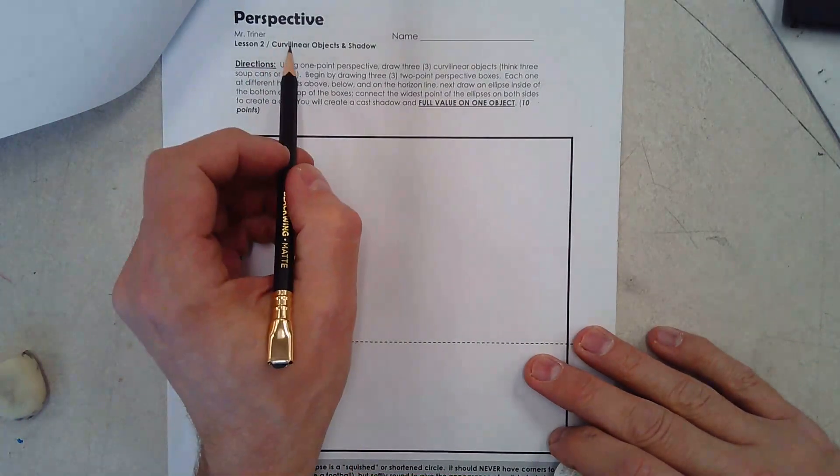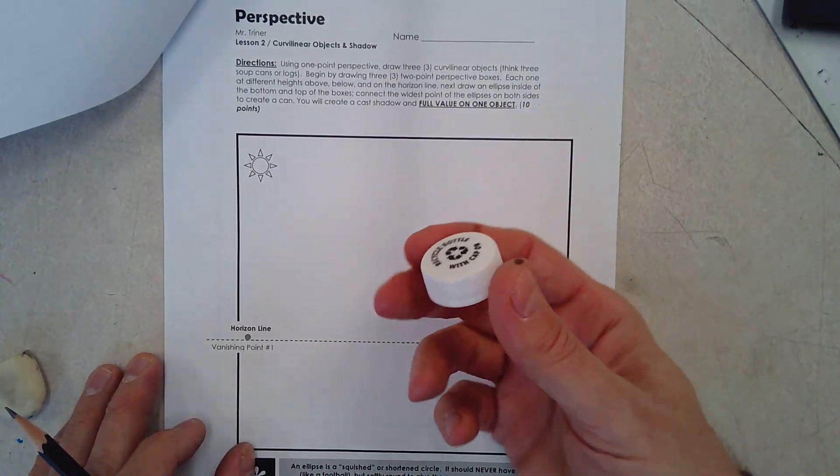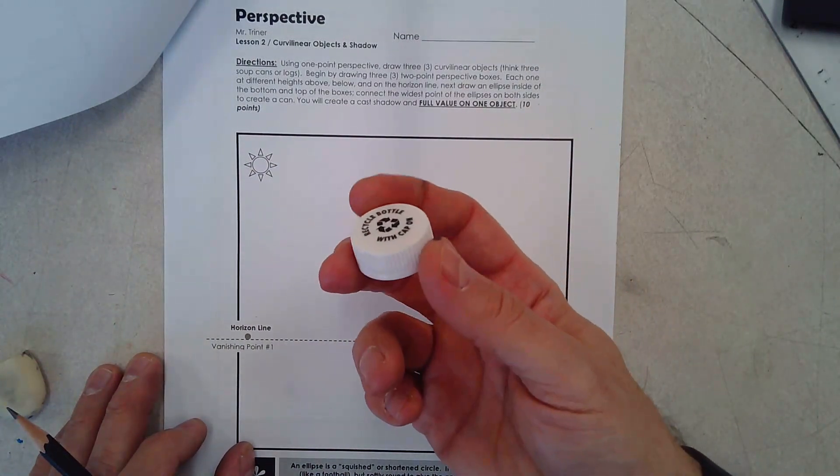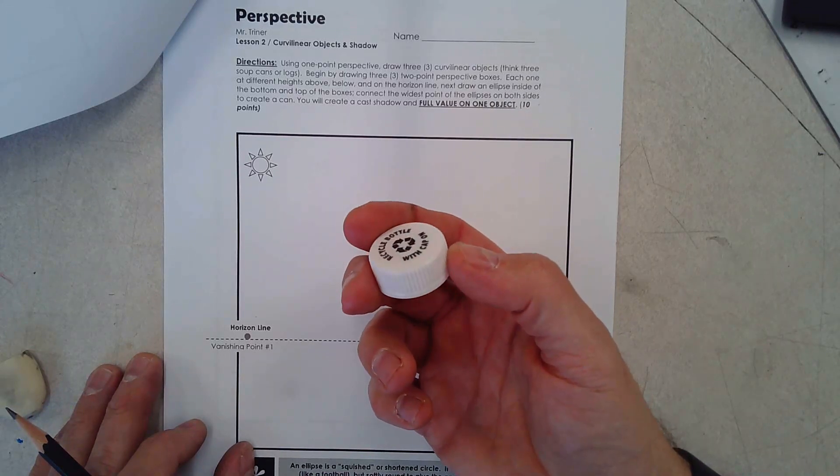As you would imagine, because curvilinear has the word curve in it, it's referencing a rounded object. So imagine or visualize this cap on this bottle.